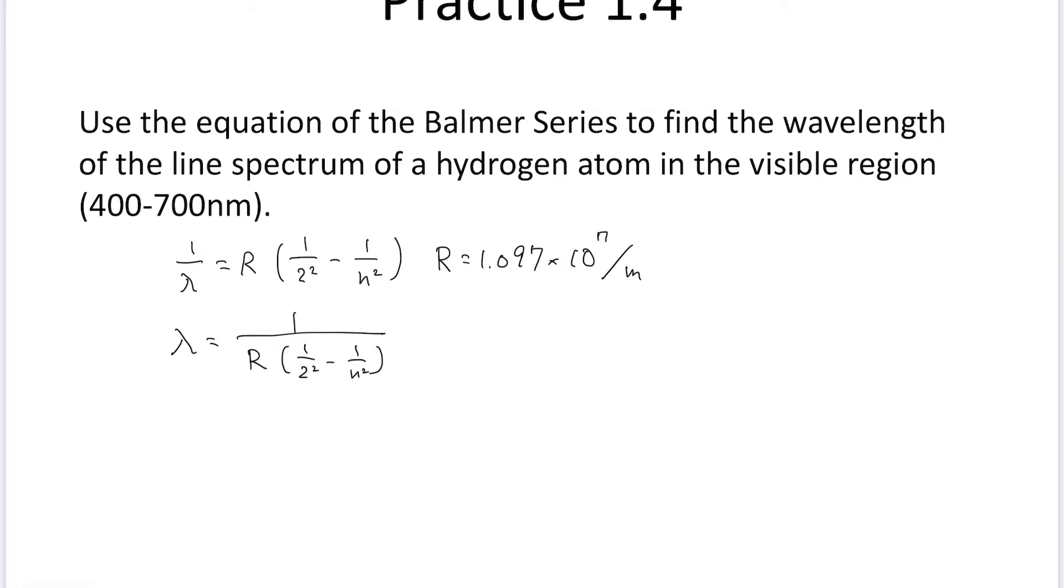And then you could substitute n equal to 3, then lambda is going to be 656.3 nanometers. Actually, this corresponds to the H alpha.